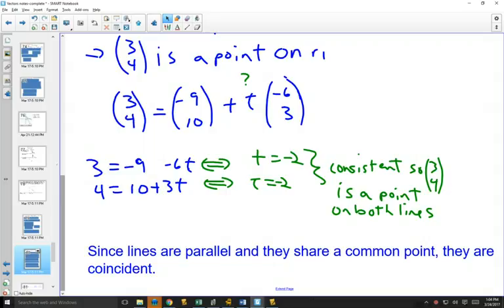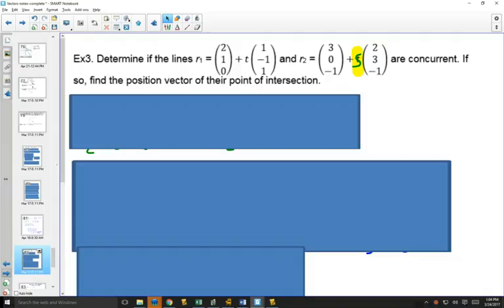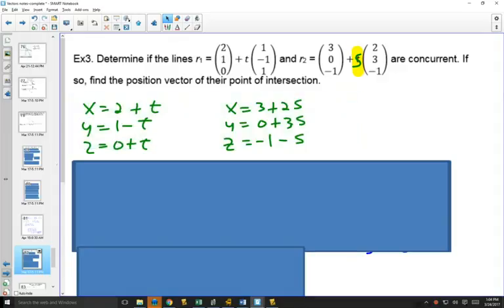And our last example. We've got three dimensions here. We want to know if they intersect, and if so, find the point of intersection. So again, these types of questions aren't hard, but if you forget how to do them, you won't know where to start, and there's usually a lot of marks associated with vector questions.